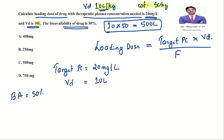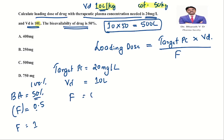Bioavailability of 50% is taken as F = 0.5. If bioavailability is 100%, F = 1; if 50%, F = 0.5.